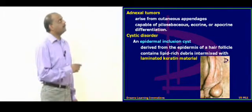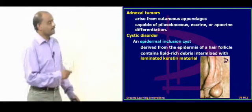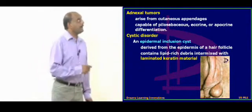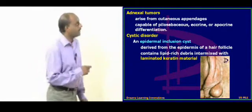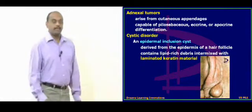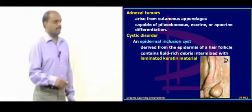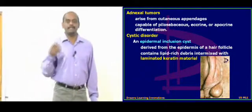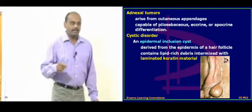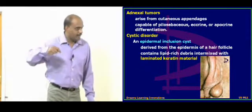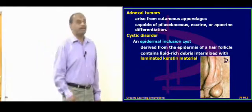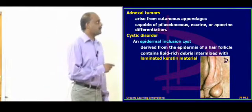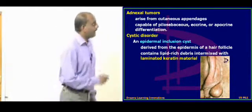Now let us talk about various cystic disorders and adnexal tumors. Adnexal tumors typically arise from the cutaneous appendages — the pilosebaceous area, eccrine glands, and apocrine glands. There are many appendages within the skin from which these tumors can arise. Now let us talk about this important tumor called the epidermal cyst.